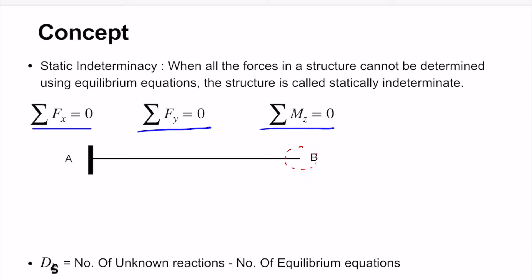Since there is no restraint to motion at B, there is no reaction there. At point A, the point cannot move vertically, so there is a vertical reaction Ay. It cannot move horizontally either, so there is a horizontal reaction Ax. Since it is a fixed support, it cannot rotate, so there is also a moment reaction Ma.